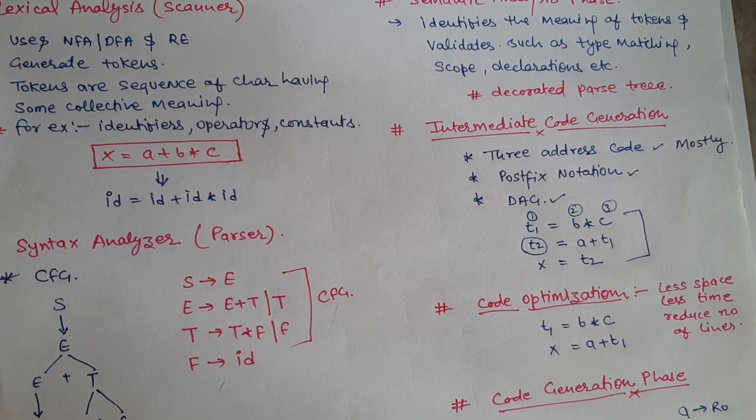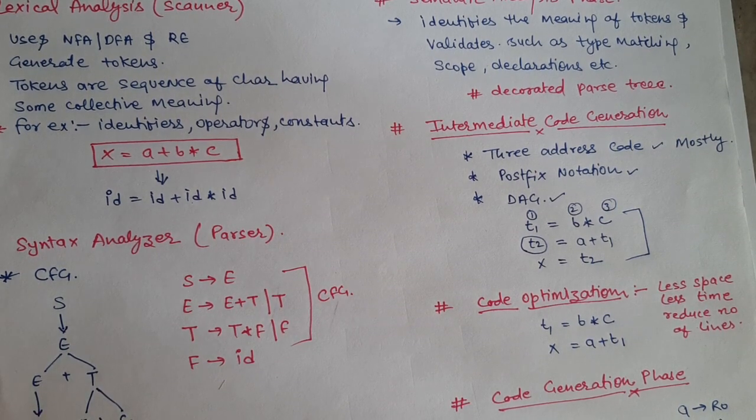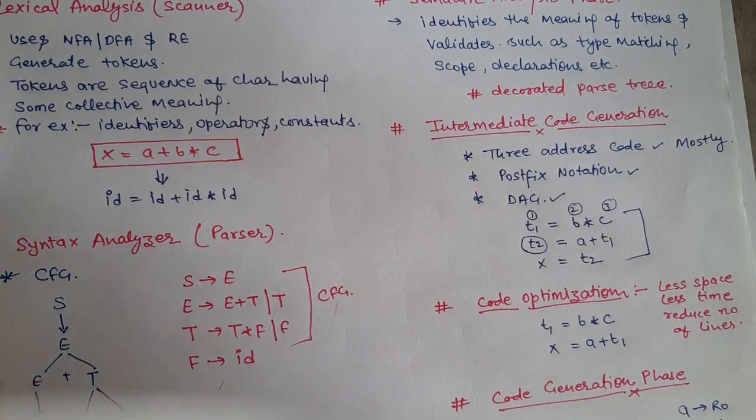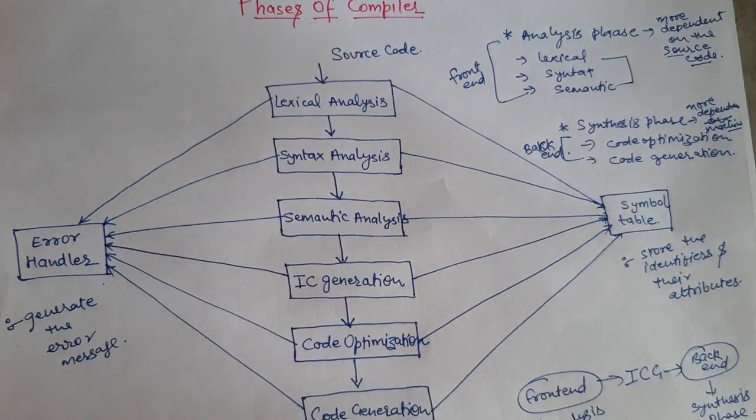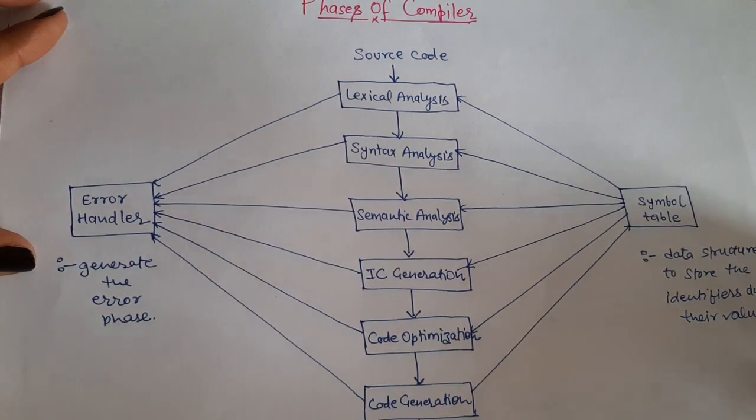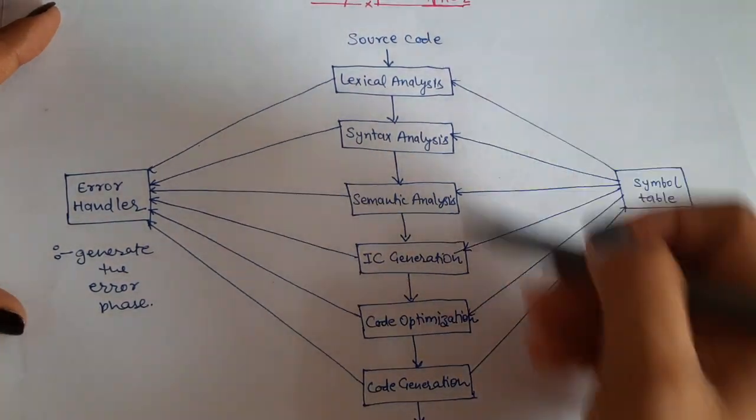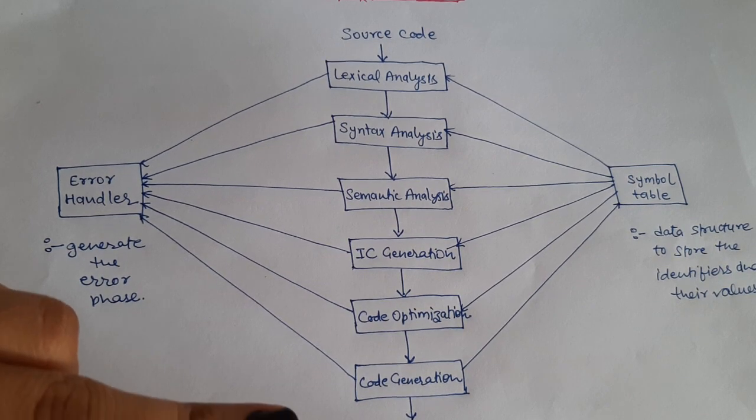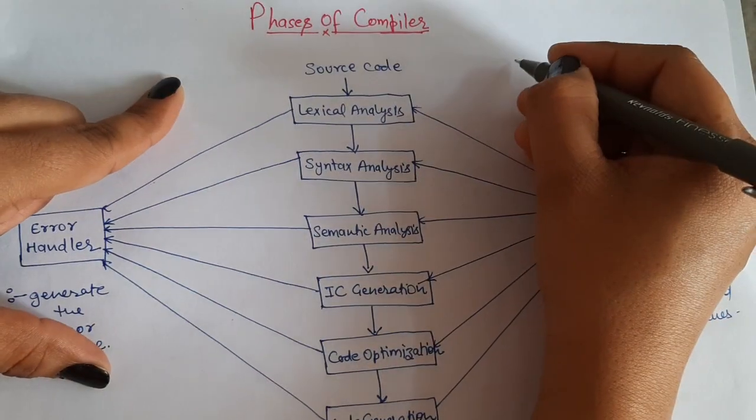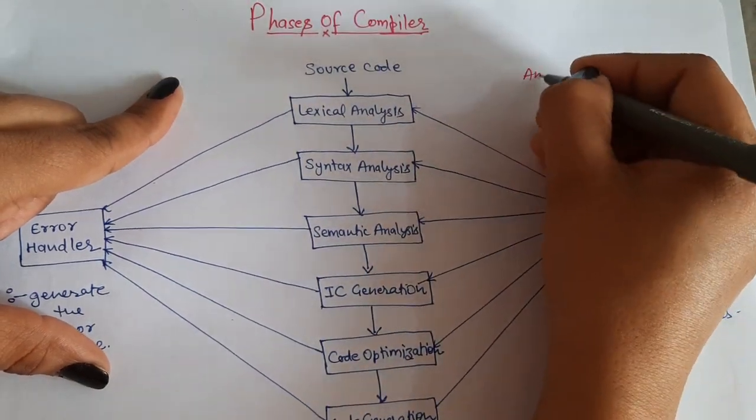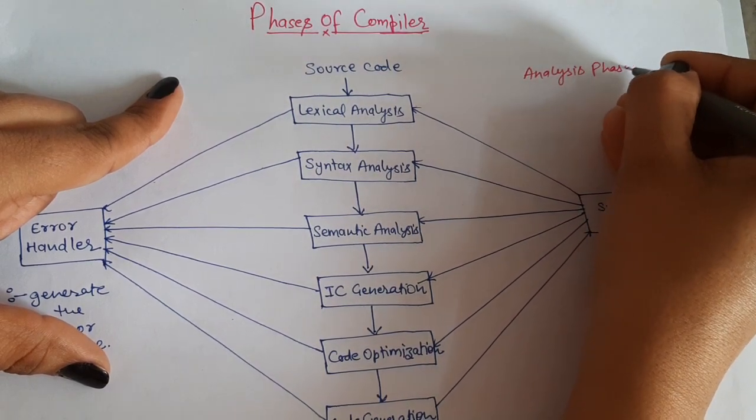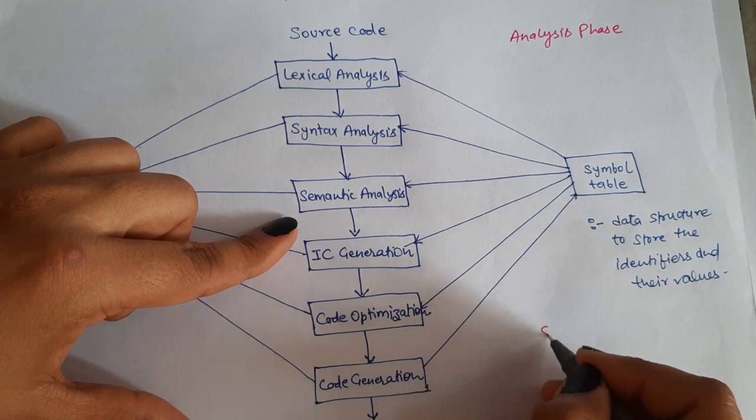Now some points to remember. The whole process or phases of the compiler are divided into two main phases. First is the analysis phase and second is the synthesis phase.